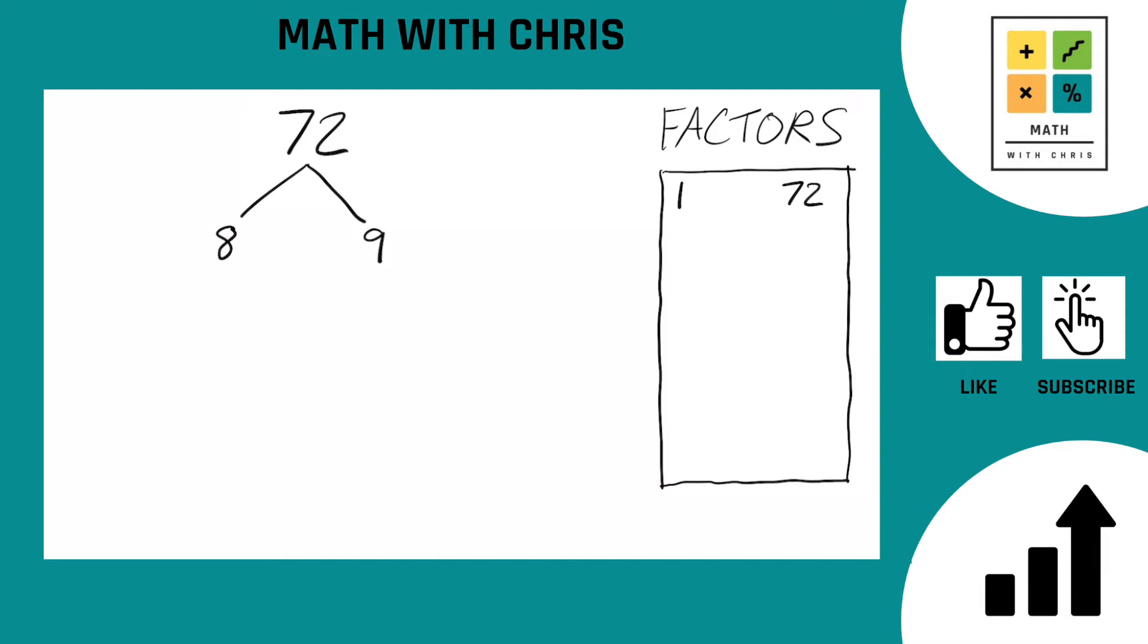Let's take a look at the eight first. Eight can be broken down further, not a prime number, so let's break it down to two times four. Two is a prime number, circle the two. And four is, of course, two more twos, so two times two, circle both of those twos. The left side is done, we have three twos there.